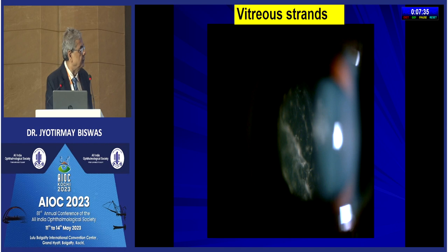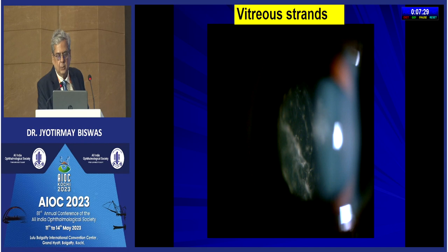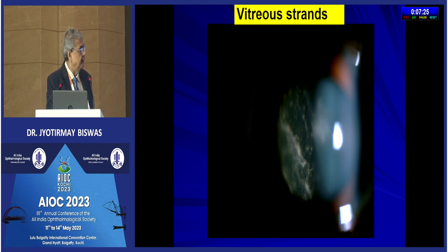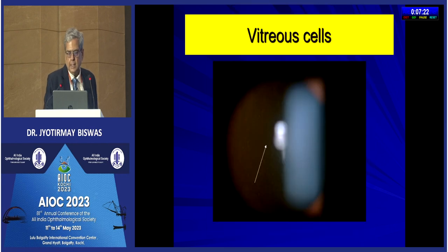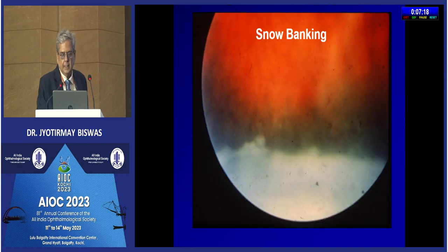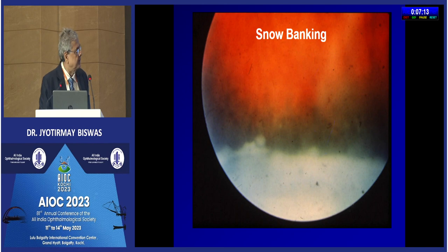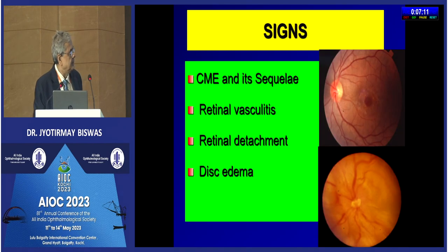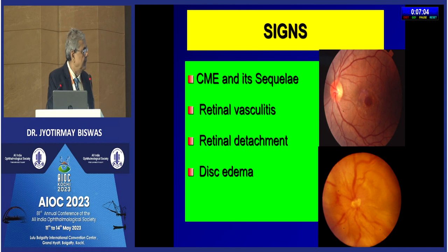In the slit lamp, we should focus behind the lens. The anterior vitreous face will show vitreous strands of opacity and vitreous cells, which can be picked up by high magnification. This snowbanking photograph captures the snowbanking. Cystoid macular edema can be seen, dull foveal reflex, sometimes macular hole formation, retinal vasculitis, retinal detachment, and disc edema.